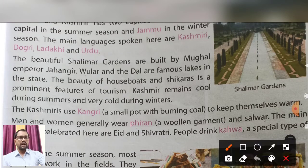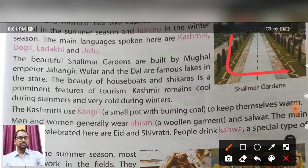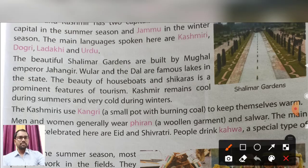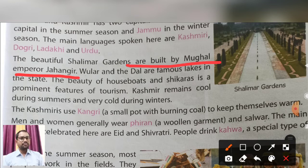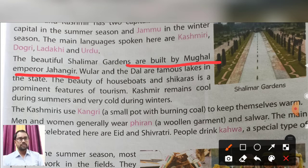Here is a beautiful garden known as Shalimar Garden. The Shalimar Garden was built by the Mughal emperor Jahangir. Wular and Dal are famous lakes in the state. The beauty of houseboats and Shikaras is a prominent feature for tourists, making tourism very famous here.